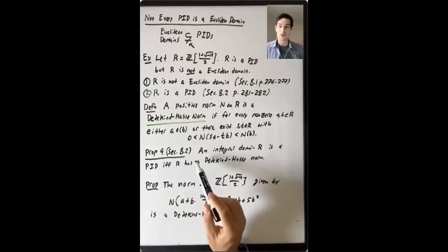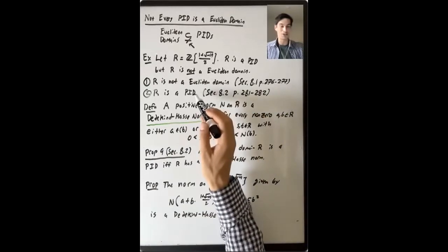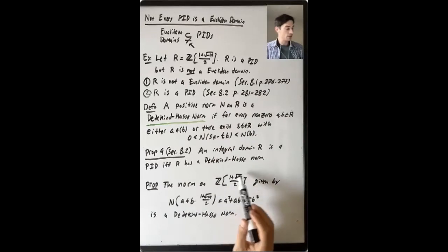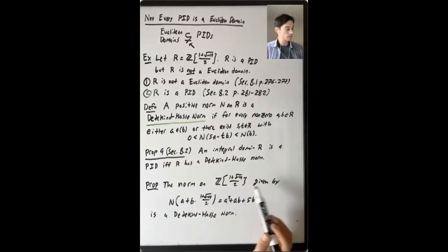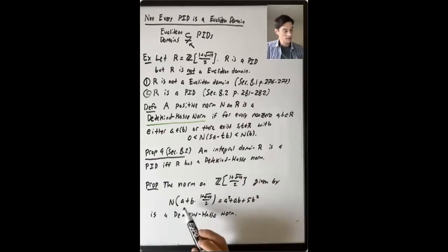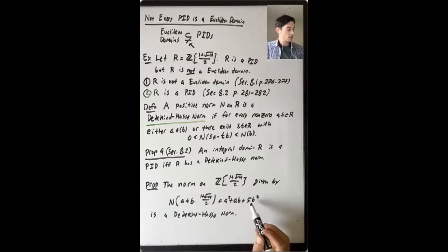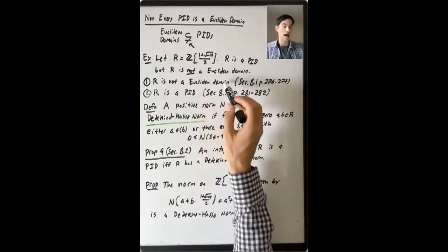This is not so hard to prove, but it's not something you would be tested on and not something that will come back later in this course. The last thing Dummit and Foote do to show that R is a PID is to say that Z[(1+√(-19))/2] has a Dedekind-Hasse norm, and they show that by giving you one: the norm that comes from the field norm in Q(√(-19)). Concretely, the norm of A + B·(1+√(-19))/2 is A² + AB + 5B². This is a Dedekind-Hasse norm, and that shows this ring is a PID. We've already seen it is not a Euclidean domain.